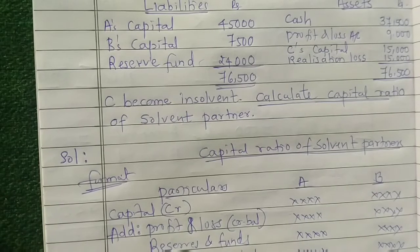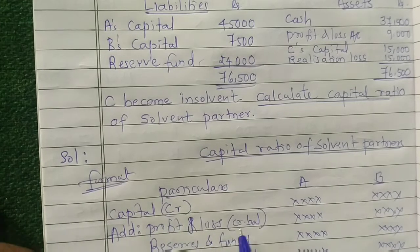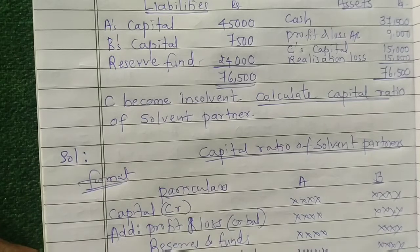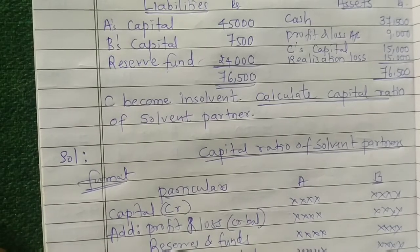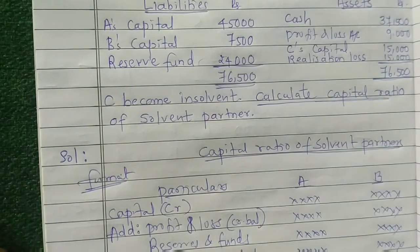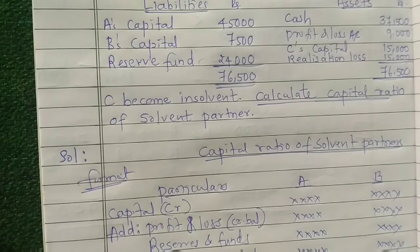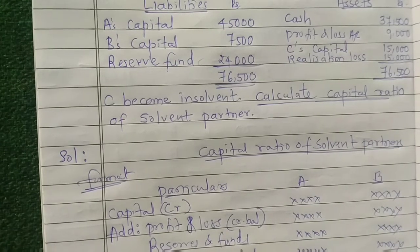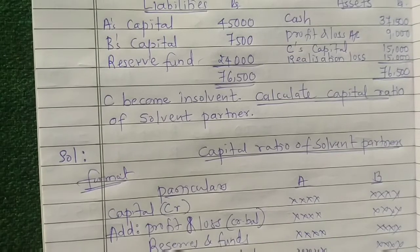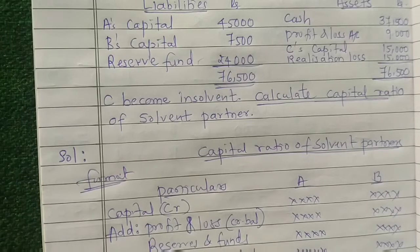Next, what to subtract: if profit and loss has a debit balance, that loss must be subtracted. In this case, the debit side shows 9,000, so that must be subtracted. Drawings must also be subtracted. Just as interest on capital is added, interest on drawings must be subtracted. The final figure gives us the capital standing ratio.